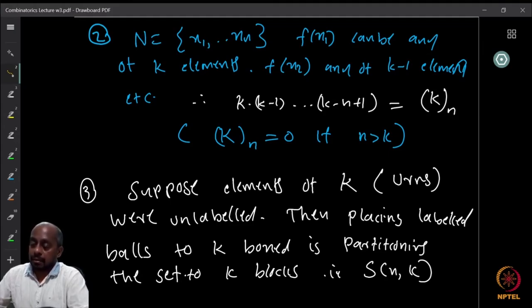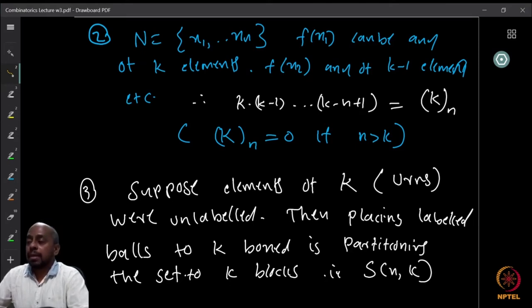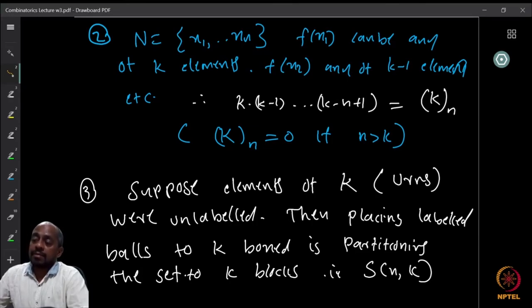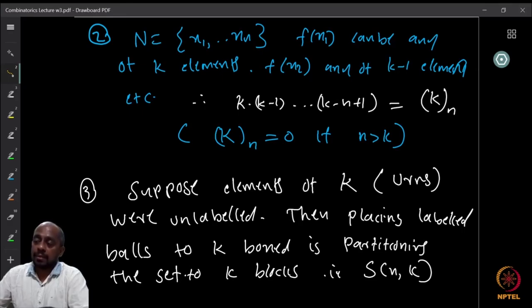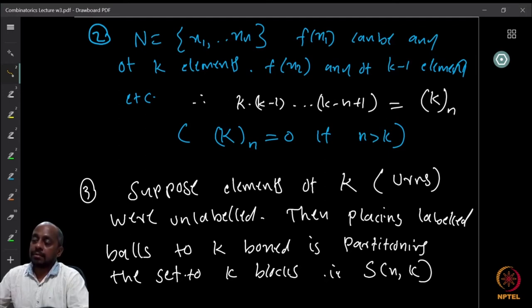Continuing, you get k·(k−1)·...·(k−n+1), which is the n-permutation of k elements, denoted kPn or the falling factorial. When n is greater than k, this quantity is zero, because you will get a factor of zero. Otherwise it is this falling factorial, which we can write as (k)_n.